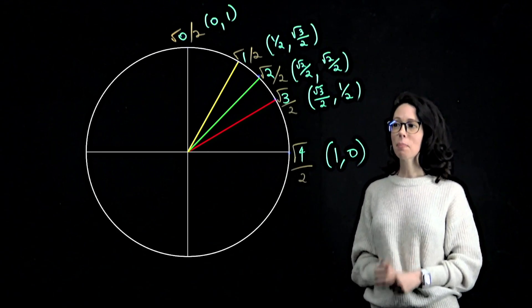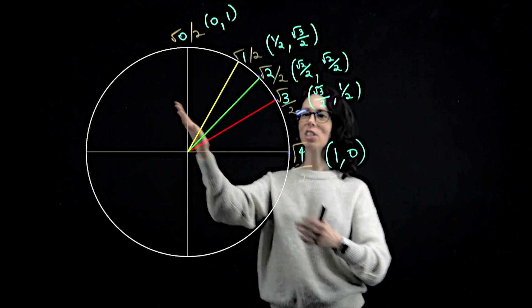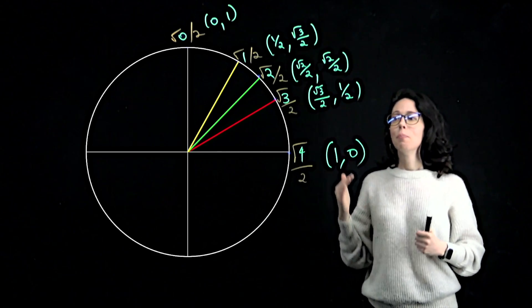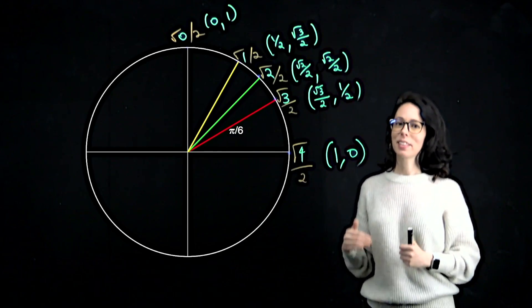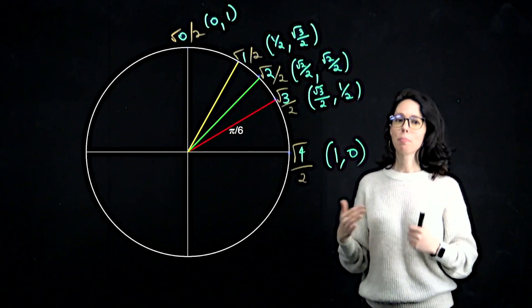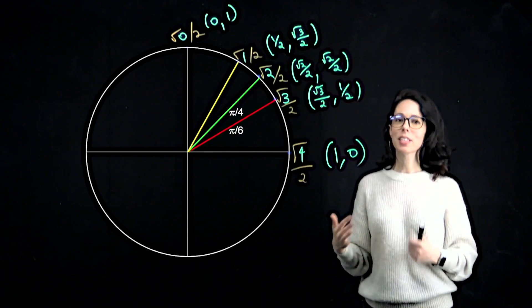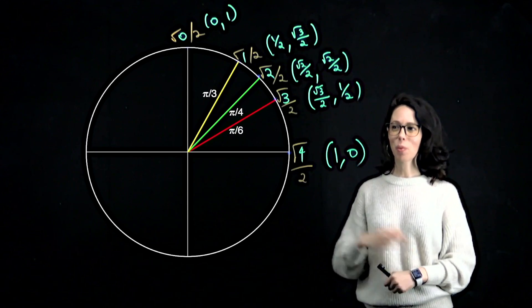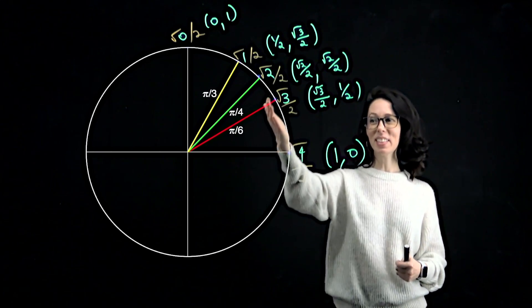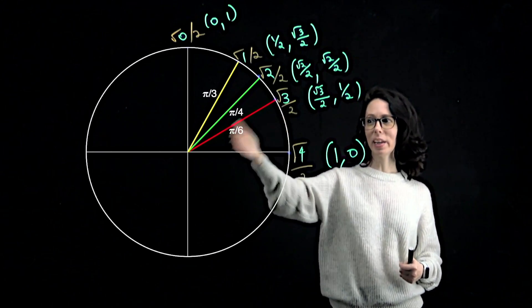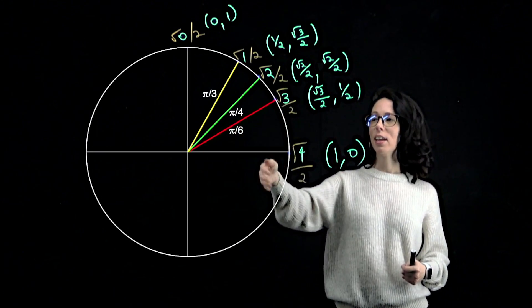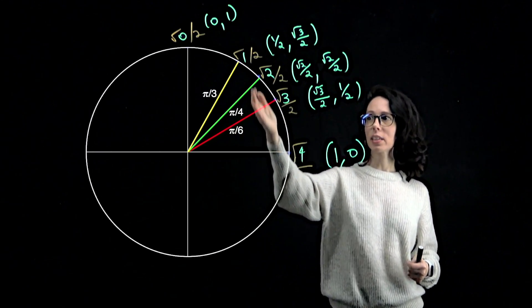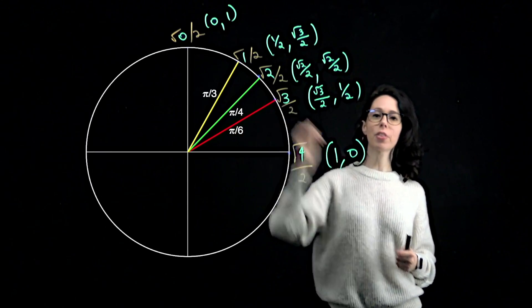Keep in mind, if you're trying to remember which angle is which: pi over 6 is smaller than pi over 4 is smaller than pi over 3. Because when we cut pi by 6, we're getting a smaller slice. So this is pi over 6, pi over 4, pi over 3.